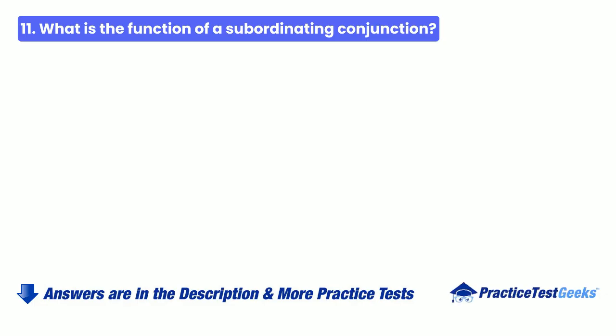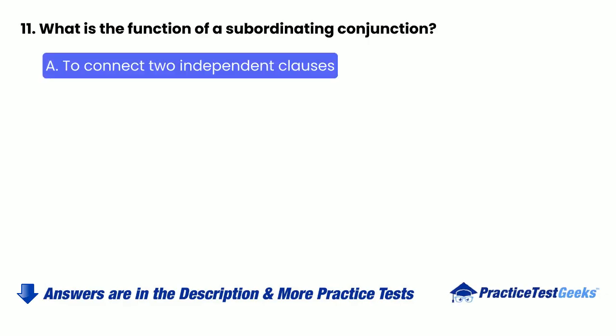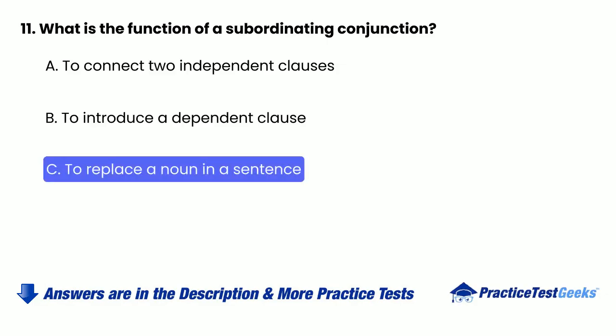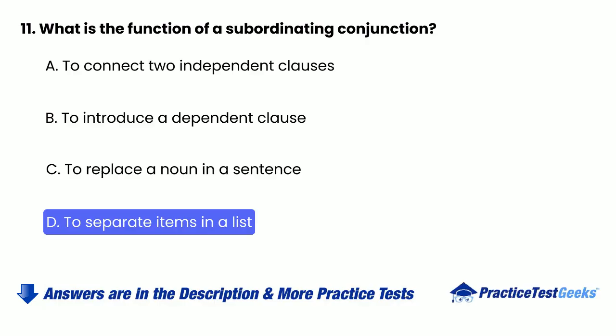11. What is the function of a subordinating conjunction? A. To connect two independent clauses. B. To introduce a dependent clause. C. To replace a noun in a sentence. D. To separate items in a list.